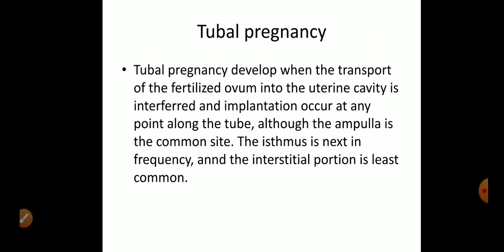Now let's study tubal pregnancy. Tubal pregnancy means implantation in the fallopian tube. Tubal pregnancy develops when the transport of the fertilized ovum into the uterine cavity is interfered with and implantation occurs at any point along the tube. The ampulla is the most common site, accounting for 70 percent, as it is a curve where movement may be obstructed. The isthmus is the second nearest site, and the interstitial portion is the least common.